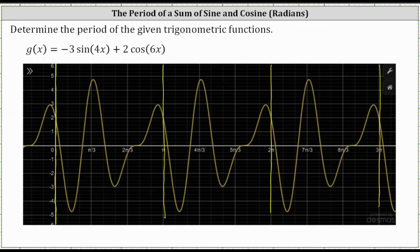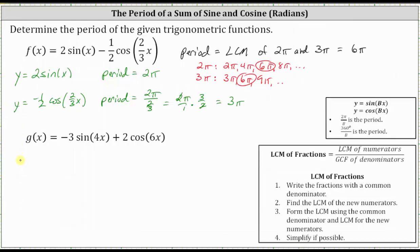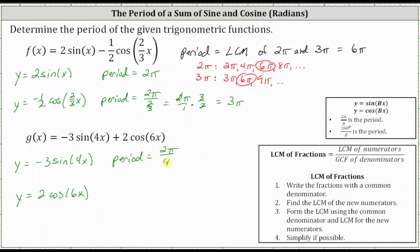Now let's figure this out algebraically. We find the period of each individual trig function. For y equals negative three sine four x, the period is equal to two pi divided by b, where b is four. Two pi divided by four simplifies to pi over two, or one-half pi. The period of y equals two cosine six x is equal to two pi divided by six, which simplifies to pi over three, or one-third pi.